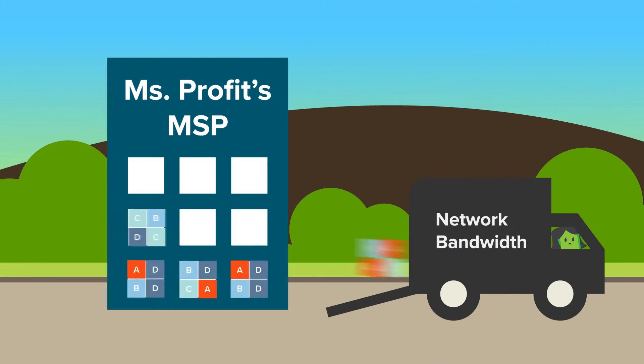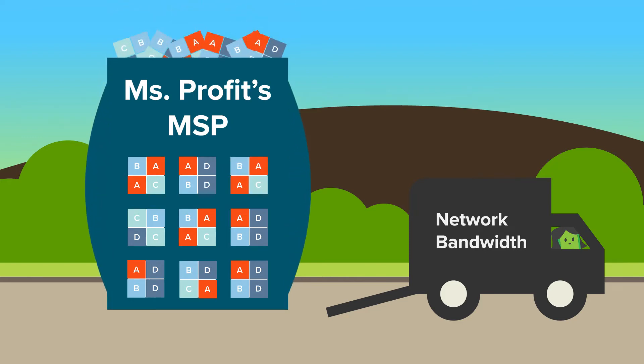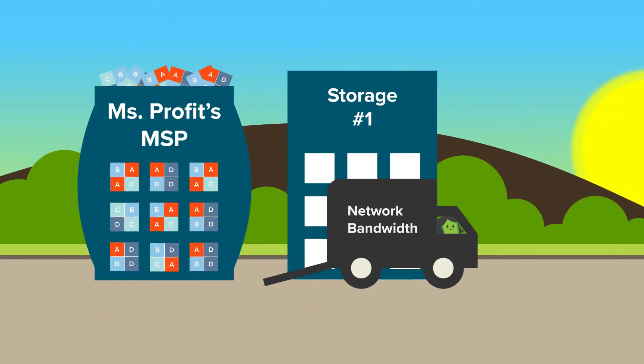Miss Profit was so successful that she was put in charge of storing even more data. Her building kept getting fuller, bulging at the seams. So she had to get a storage unit to help hold it all.